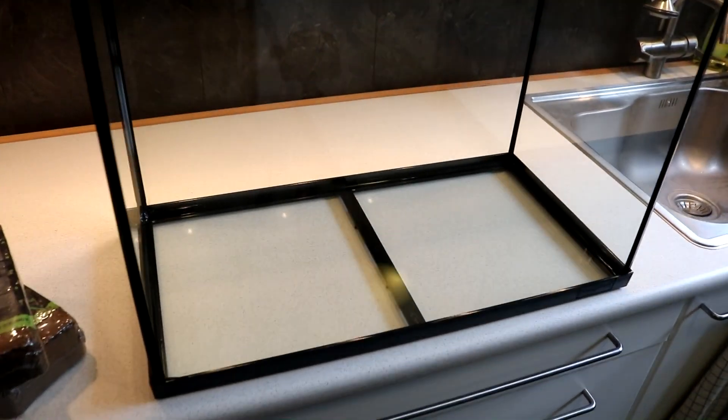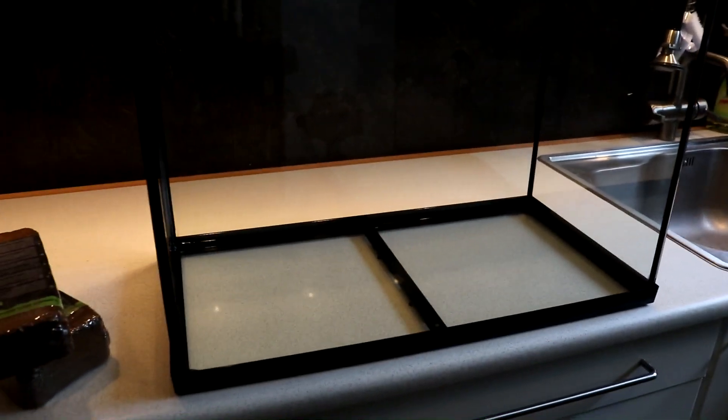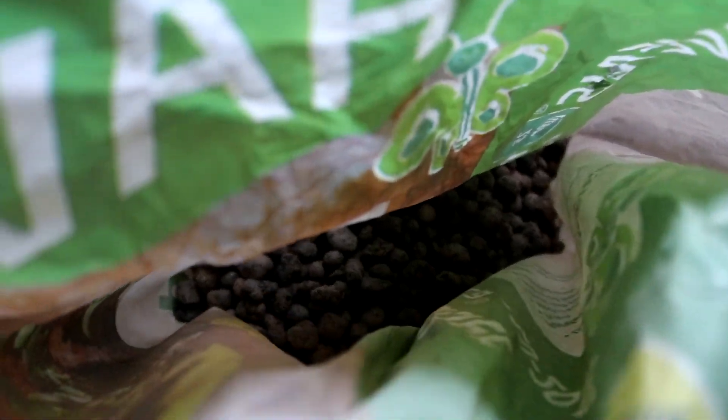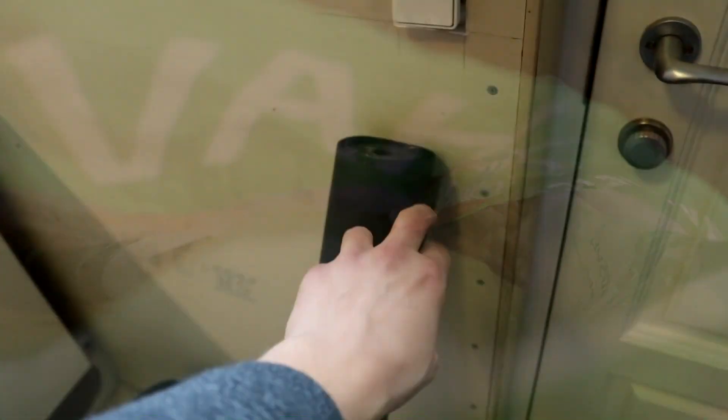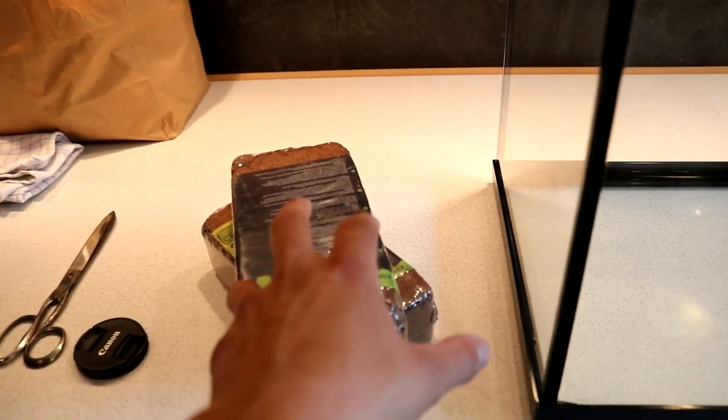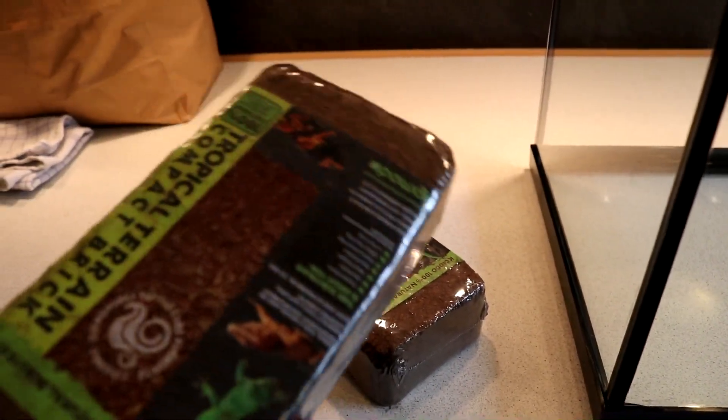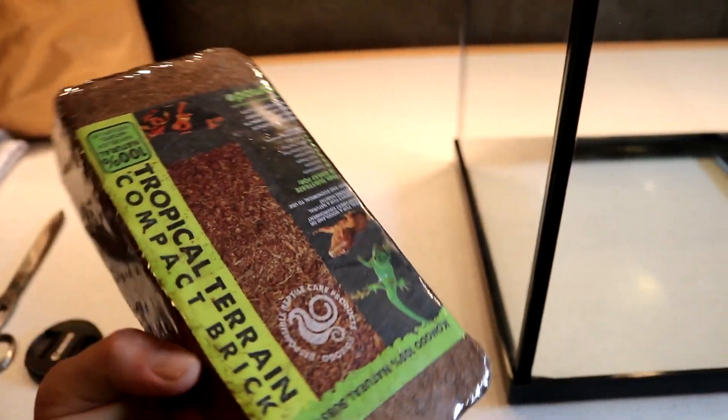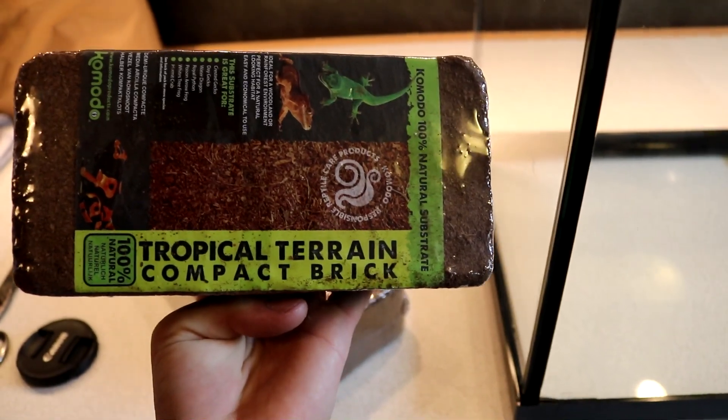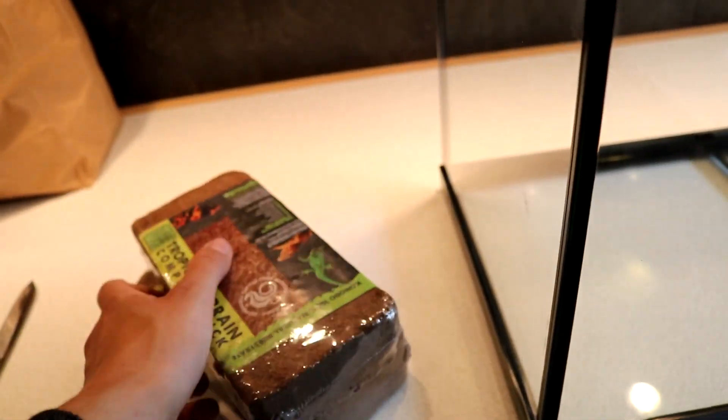The first thing you're going to need is of course an aquarium. You can also use a big plastic container or some other stuff. Then you're going to need some clay balls and some netting. I'll talk more about this in a minute. Then you're going to need this coconut brick thing, and then of course some dirt.